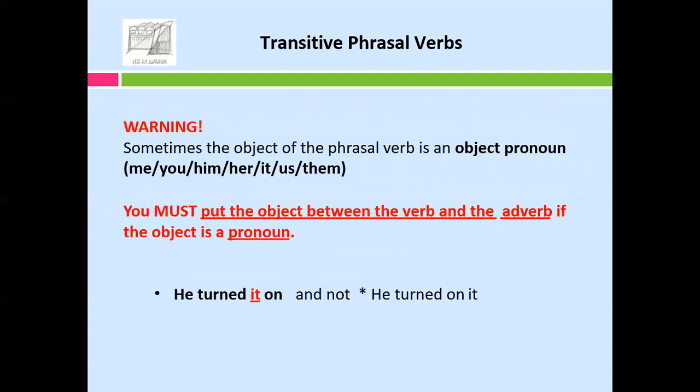Warning! When the object is an object pronoun — me, you, him, her, it, us, them — you must put the object pronoun between the verb and the adverb. For example: 'He turned it on.' Never say 'He turned on it.' Always, when you use an object pronoun, it has to be in the middle between the verb and the particle. Never at the end — because it's an object pronoun. That is a basic rule to remember.